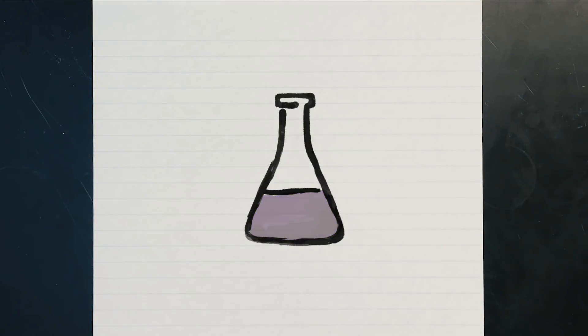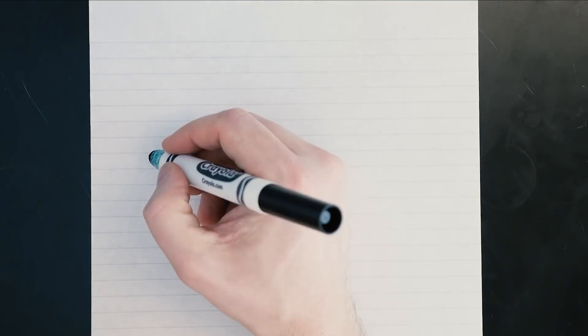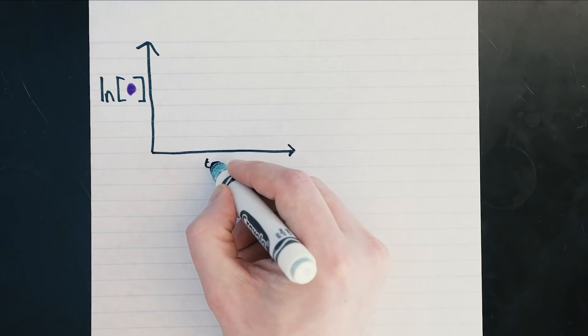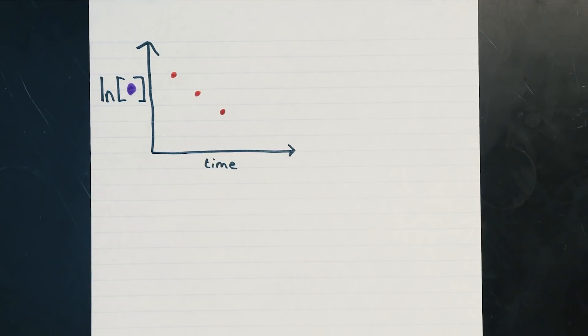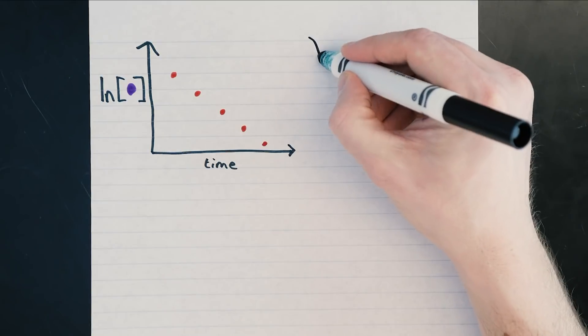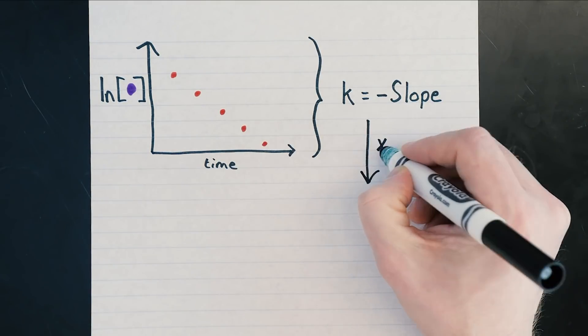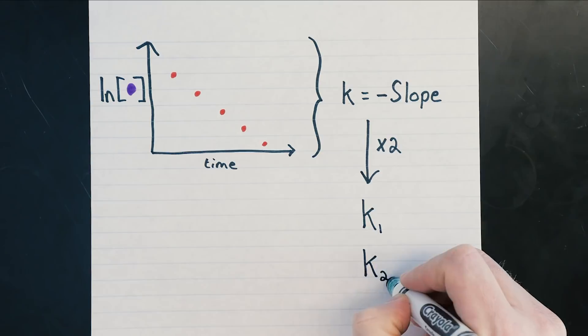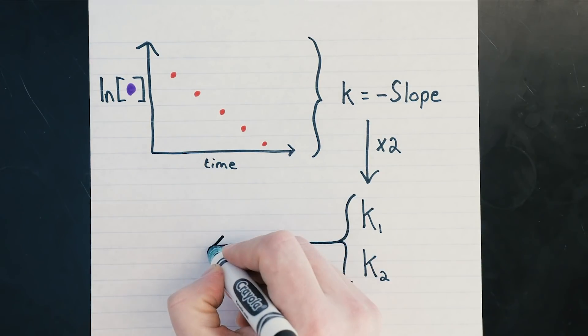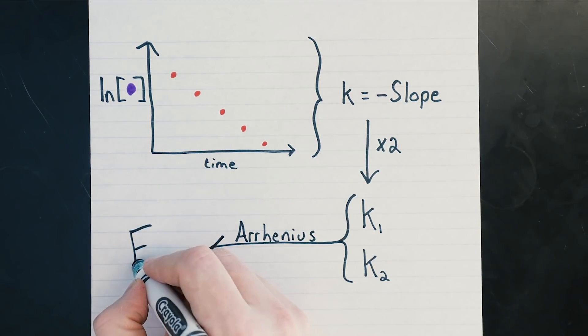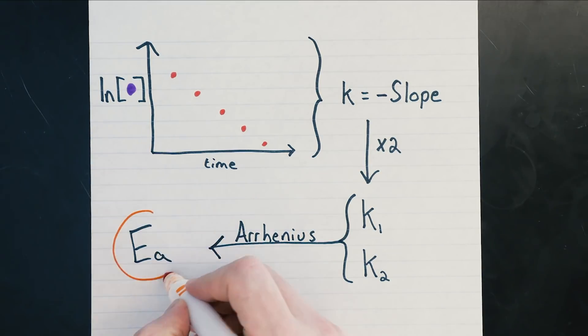Which can be measured with a spectrophotometer. So in summary, we have a pseudo first-order reaction and we're monitoring its progress over time by measuring purpleness every so often. We can use this data to calculate the rate constant k using the rate law, and if we measure k at two different temperatures we can use the Arrhenius equation to determine the activation energy.